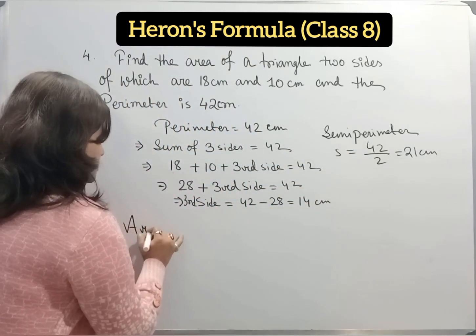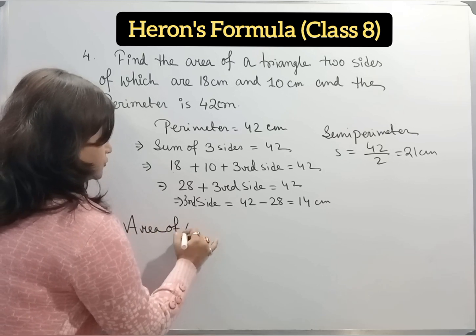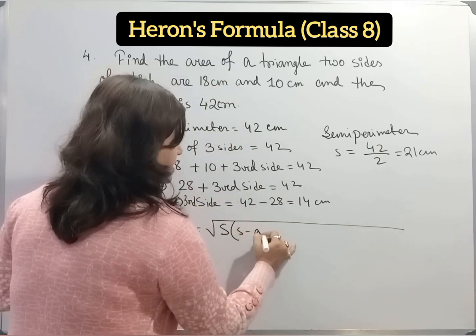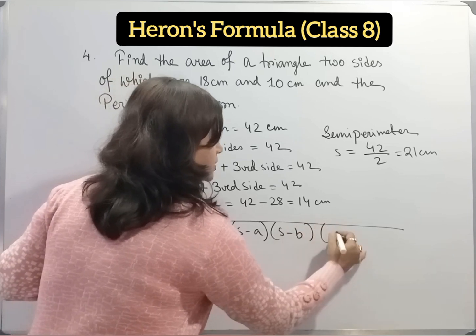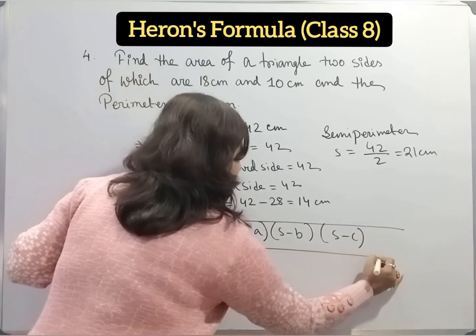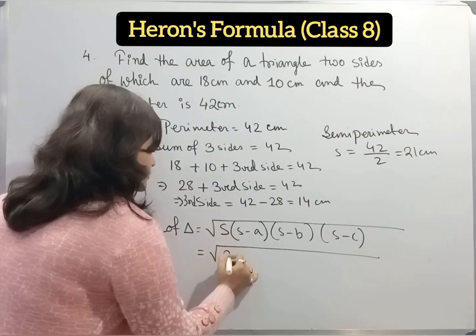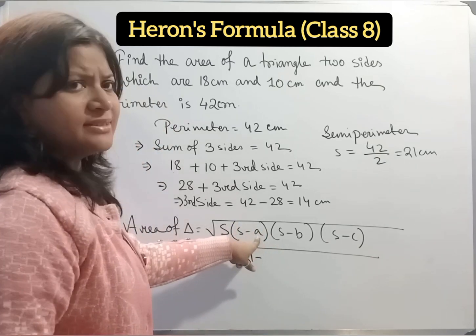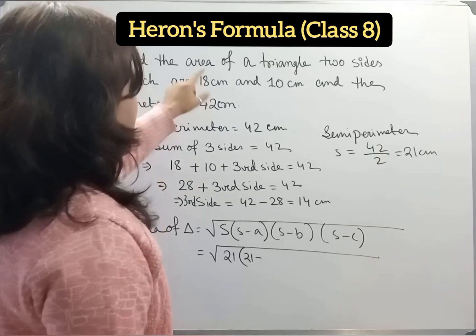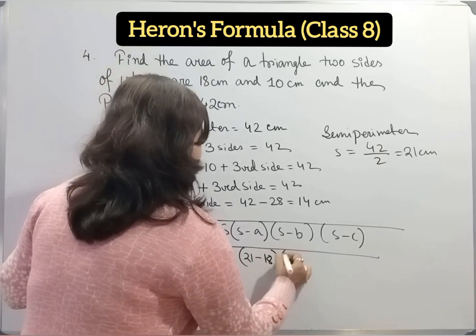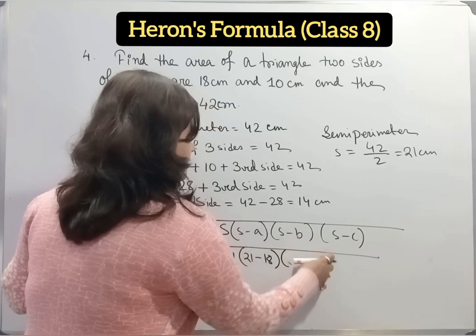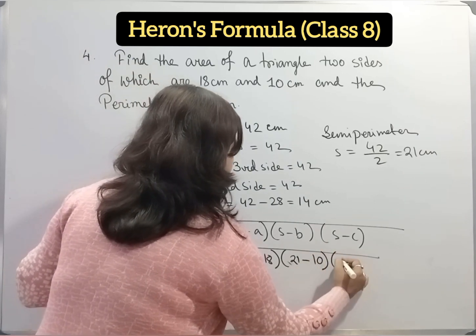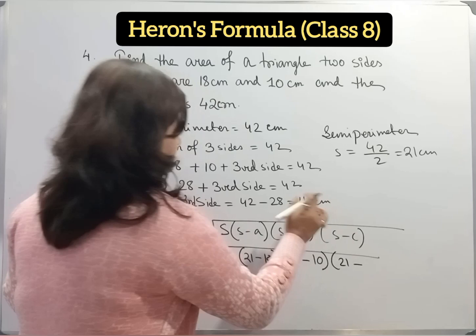Now area of the triangle. Here we use Heron's formula. Area of triangle equals square root of S into S minus A into S minus B into S minus C. Now S is the semi-perimeter. Here S equal to 21. So in the place of S I will write 21. Now 21 minus A. A, one side, any one side of the triangle. I will take 18. So S minus B, and S equal to 21, 21 minus 10, and S minus C, so 21 minus 14.